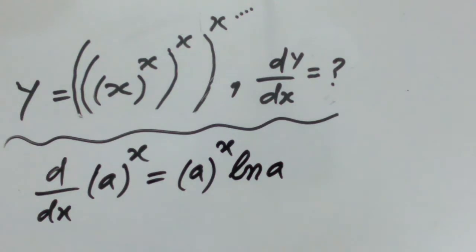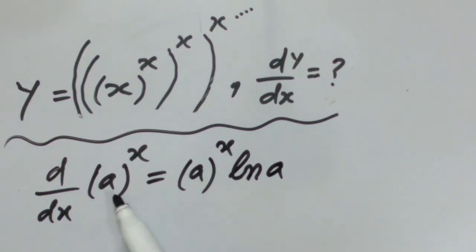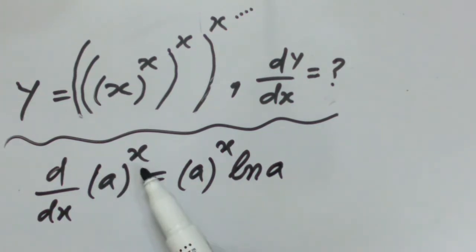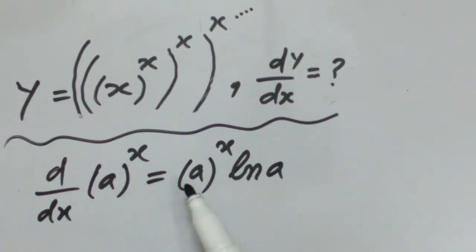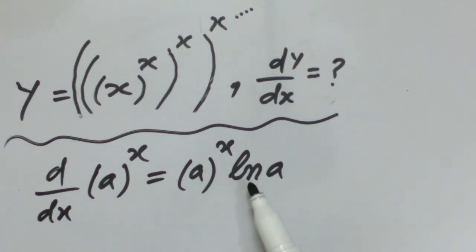Another formula applies when the function is an exponential function, that is a^x, where the base a is a constant and x is the variable. The derivative of this type of function is equal to a^x · ln(a). These formulas are already explained in our previous lectures.